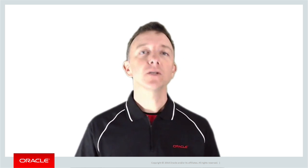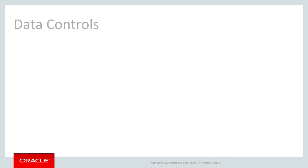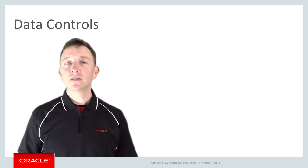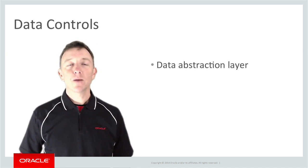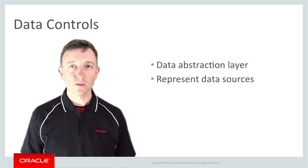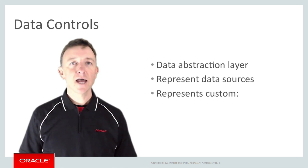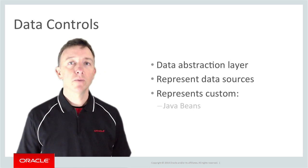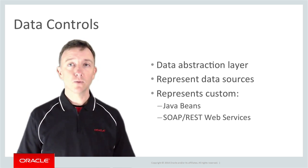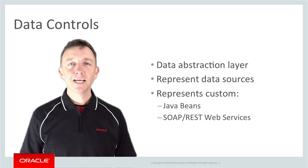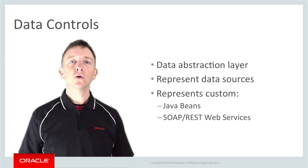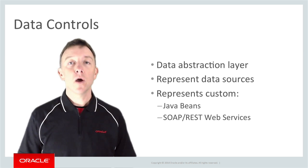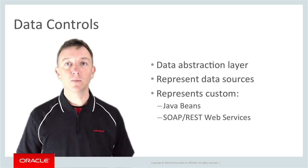Well, guess what? Oracle has a solution for you. MAF introduces the concept of a data control, which is essentially a MAF framework abstraction that sits above different data sources. The data can be derived from a custom Java bean, a SOAP web service, or a REST-based web service. In particular, as the Java bean can call anything behind the scenes, this implies we can access all sorts of different data sources without knowing their underlying implementation from the user interface perspective.